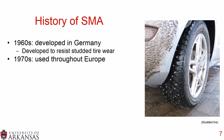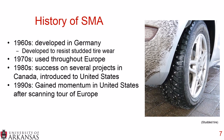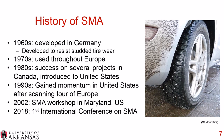What is the history of SMA? It was developed in Germany in the 1960s to resist studded tire wear. In the 1970s it was used extensively throughout Europe. In the 1980s it came to North America, used in Canada and introduced in the United States. In the 1990s, use in the US continued to increase after a scanning tour of Europe, where professionals went to examine SMA work and then implemented it in the US. In 2002 there was an SMA workshop in Maryland, and in 2018 the first international conference on SMA was held in Atlanta, Georgia.